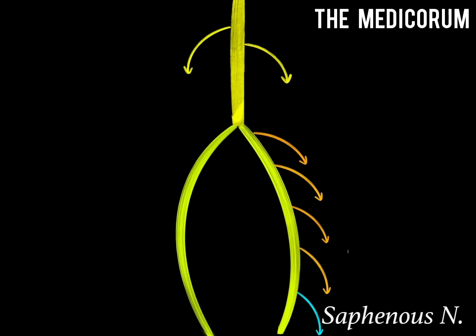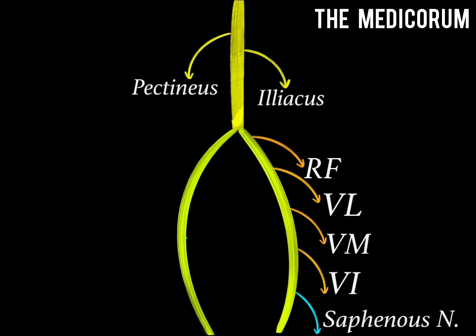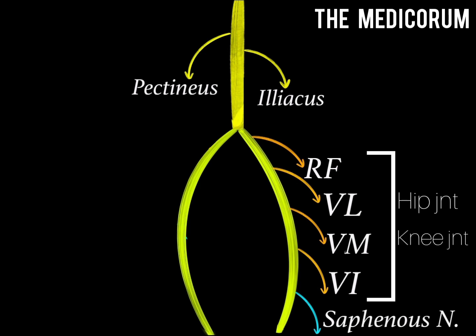The posterior division also gives a cutaneous branch, the saphenous nerve. Additionally, the muscular branches from the posterior division supply the hip joint and the knee joint, and also give some small branches to the femoral artery.